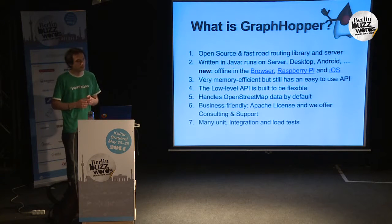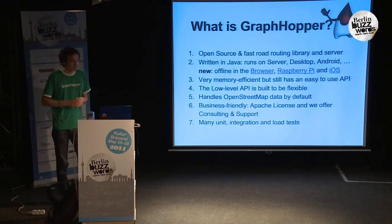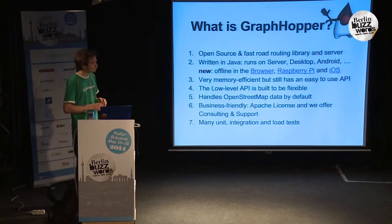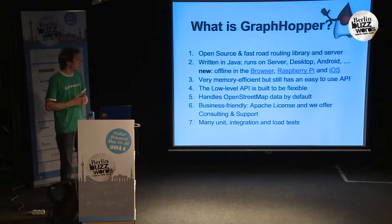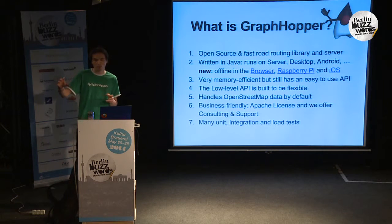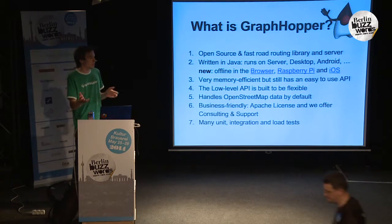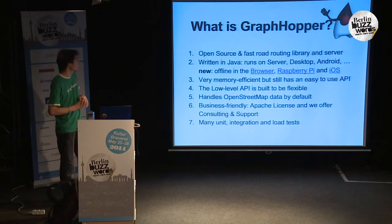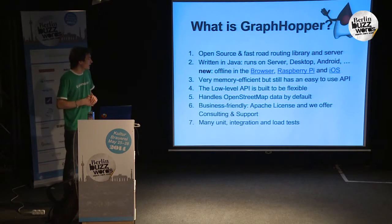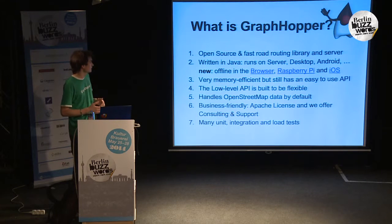We have really memory-efficient data structures built in, and all the APIs we offer are mostly easy to use. The low-level API is built to be flexible, so you can grab one part and use it in your products for a completely different use case, or replace the storage with your own storage system. It handles OpenStreetMap data by default, is Apache-licensed, and we offer consulting and support.